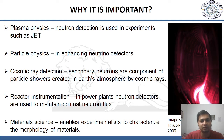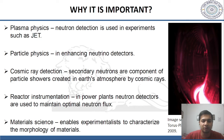It is important to detect neutrons because in plasma physics, neutron detection is used in experiments such as JET. In particle physics, it involves enhancing neutrino detectors. In cosmic ray detection, secondary neutrons are components of particle showers created in Earth's atmosphere by cosmic rays. In power plants, neutron detectors are used to maintain optimal neutron flux. In material science, it enables experimentalists to characterize the morphology of materials. So it has a wide range of applications.